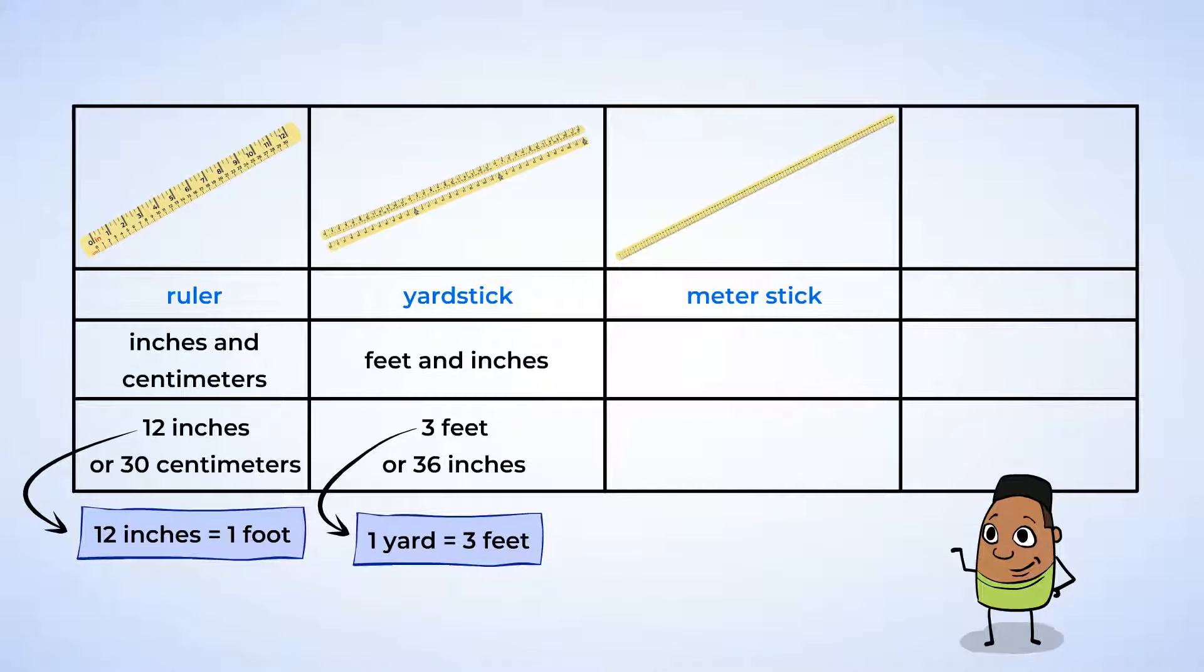Now, next is the meter stick. This tool is pretty long too, just like the yardstick. But the difference is that it measures in centimeters and millimeters. It's 100 centimeters long, but it's called a meter stick. And so that tells us that one meter is the same as 100 centimeters.